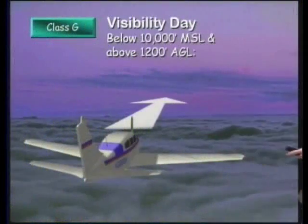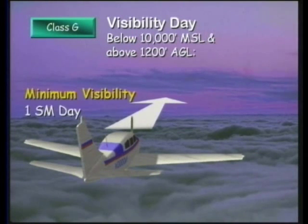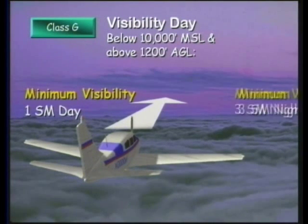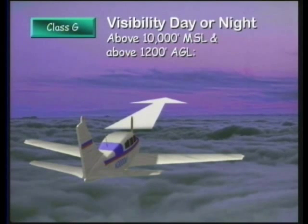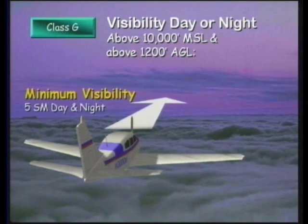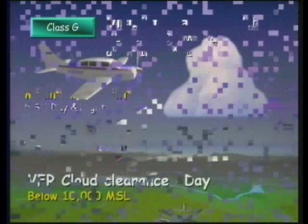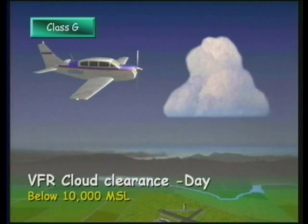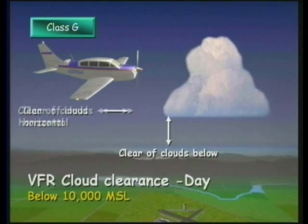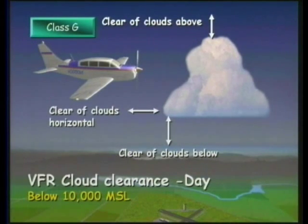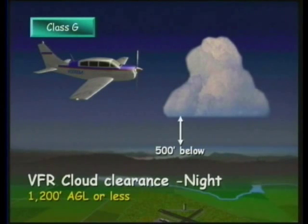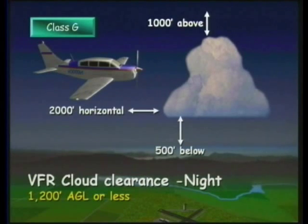Let's take a look at visibility requirements for class G airspace. The visibility requirements for VFR flight in class G airspace are one mile during the day when operating below 10,000 feet MSL. This visibility goes up to three statute miles at night. Now let's take a look at visibility when operating above 10,000 feet MSL and above 1,200 feet AGL — you'll need to have at least five statute miles visibility day or night. In class G airspace, when operating below 10,000 feet MSL during the day, you need to operate clear of clouds on all sides like we see in this graphic. At night, you'll need to stay 500 feet below the clouds, 1,000 feet above them, and 2,000 feet horizontally from the clouds.